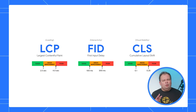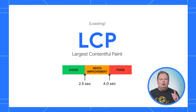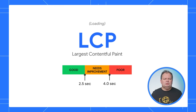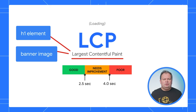LCP is one of three core web vitals that Google uses to measure user experience on web pages. LCP is the loading metric, and measures how long the page takes for the user to consider it mostly loaded. We define that as looking at when the largest bit of content is loaded — this is often an H1 element or a banner image, and images are what we're going to talk about here.